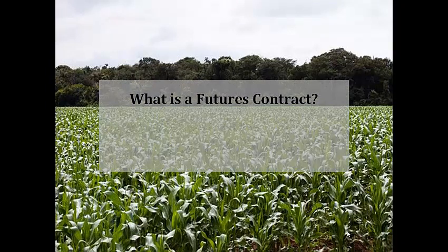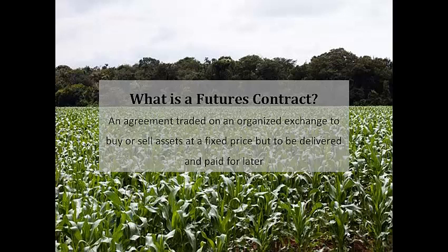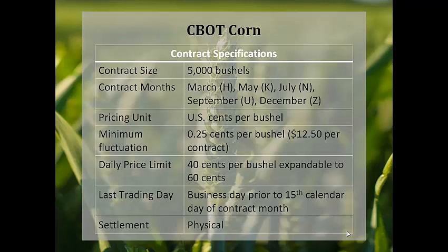Corn can be traded as a financial instrument in the form of a futures contract. A futures contract is a standardized agreement with specific terms traded on an organized exchange to buy or sell assets at a fixed price but to be delivered and paid for in the future. These are the key standardized features of corn futures listed on the Chicago Board of Trade, the benchmark contract for globally traded corn. Notice that there is a daily price limit of 40 cents per bushel to limit the volatility of corn futures. Settlement can be made in the form of physical delivery of goods or cash settled for the difference between the spot price of the asset and the price agreed in the futures contract.